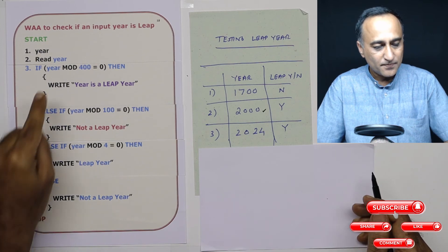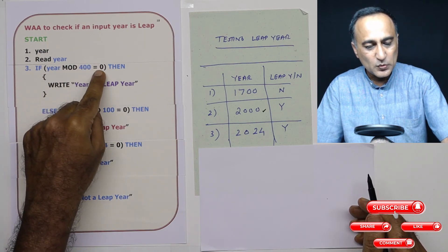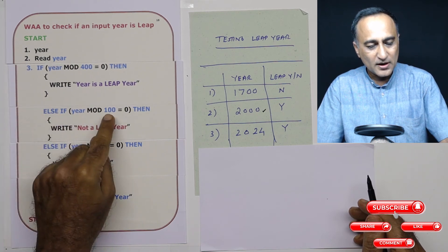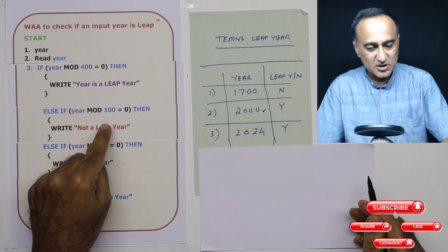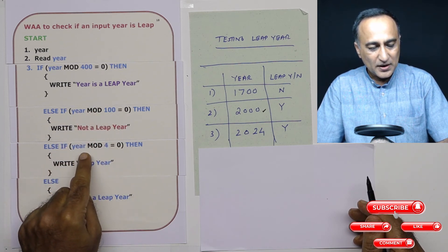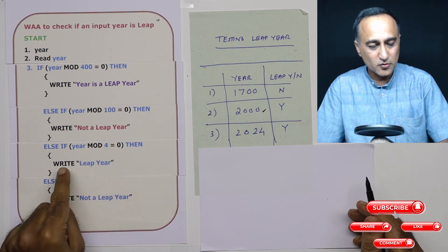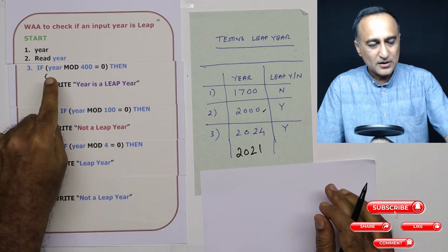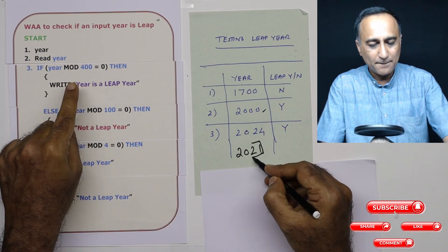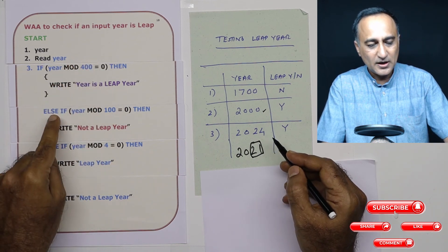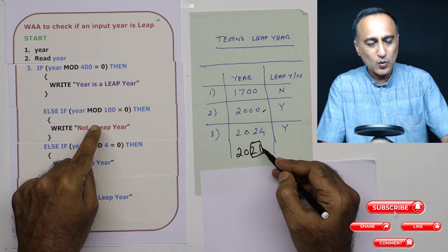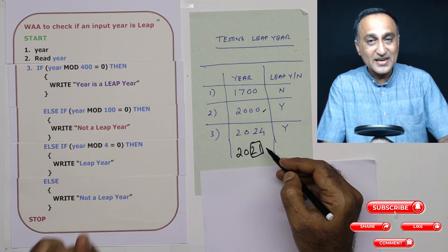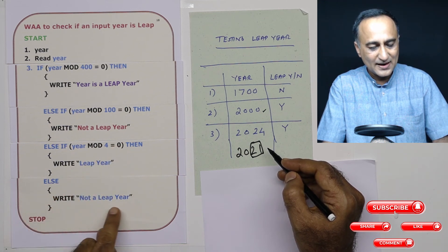Let's take one more year: 2024. 2024 mod 400 — remainder is 24, so the condition is false. 2024 mod 100 — remainder is 24, so this condition is also false. Now 2024 mod 4 — the remainder is definitely zero, so it says leap year, then stop. Take another example: 2021. 2021 mod 400 — remainder is 21, not zero. 2021 mod 100 — remainder is 21, not zero. 2021 mod 4 — remainder is 1, not zero. So it comes to the else and says not a leap year.